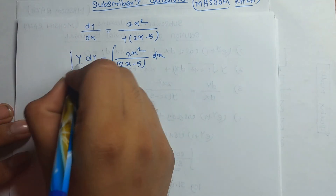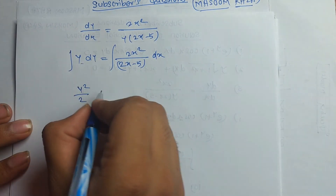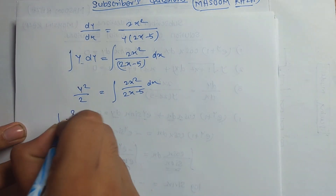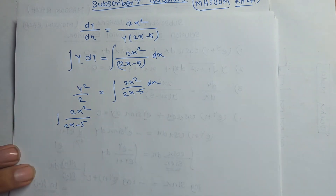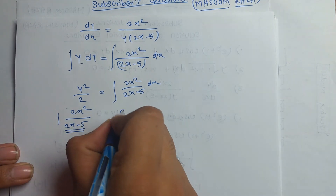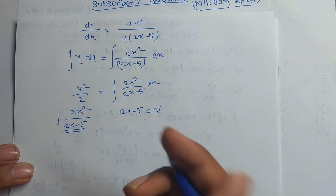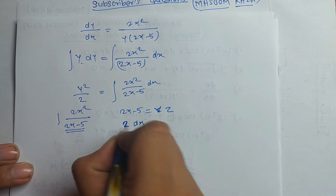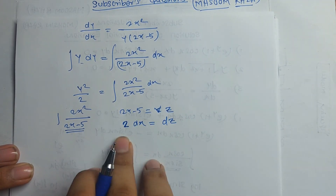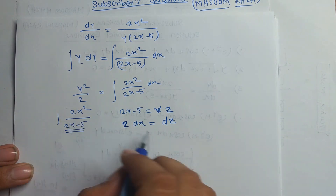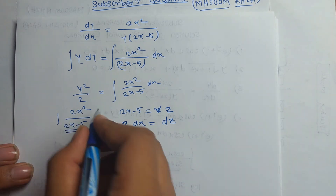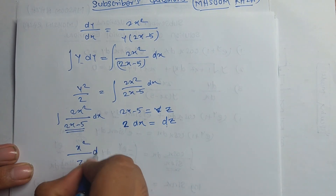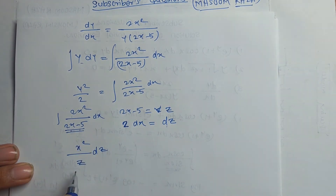The left side integrates simply to y²/2. To integrate the right side, 2x²(2x − φ), we use the substitution z = 2x − φ. Differentiating gives 2dx = dz, so dx = dz/2. Also, from z = 2x − φ, we get x = (z + φ)/2. Substituting, the integral of x²(2x − φ)dx becomes the integral of ((z + φ)/2)² · z · (dz/2).